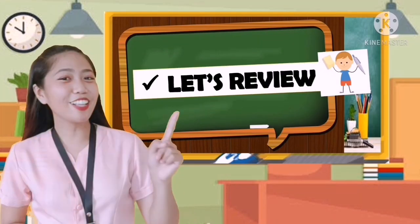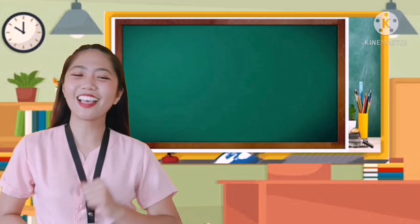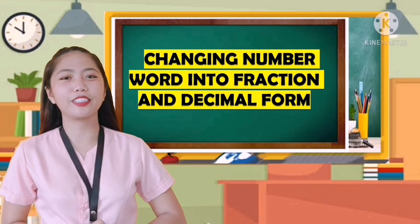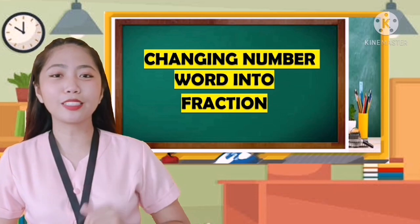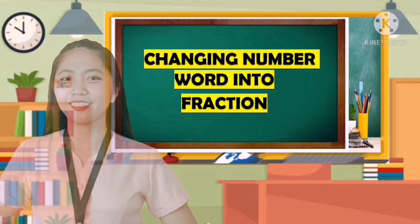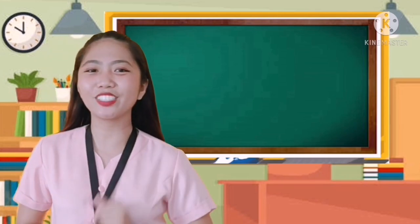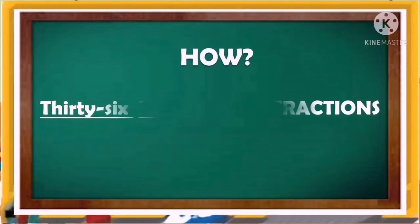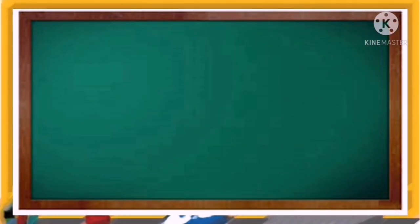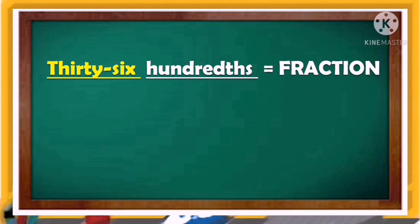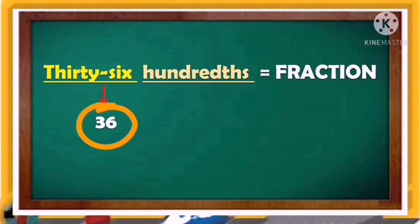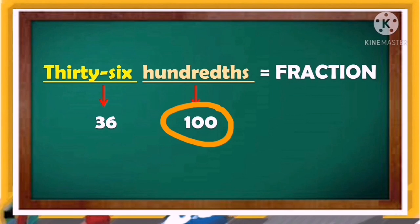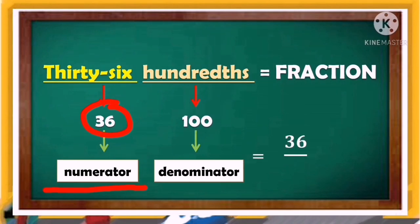Before we start our new topic, let us first review our past lesson. Do you still remember? It is all about changing number words into fraction and decimal form. Let's try to answer: 36 hundredths. Change the number word 36 into its numerical equivalence — 36 — and the word 'hundredths' will become 100.